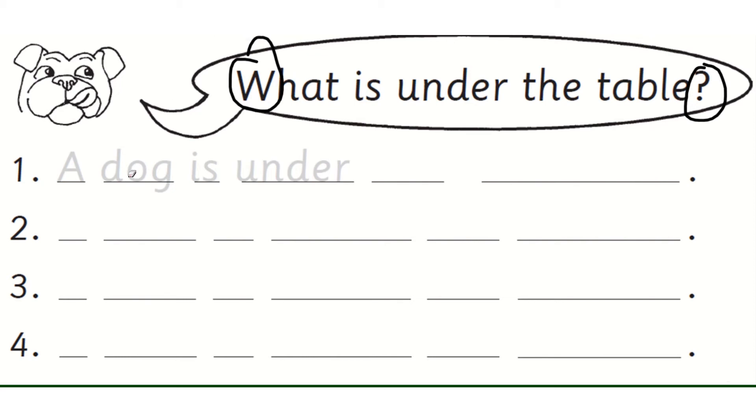Okay, so just like you did on the page before, you're going to complete these sentences, four of them, for the things that were under the table. So don't forget, this time it's not on, it's under.